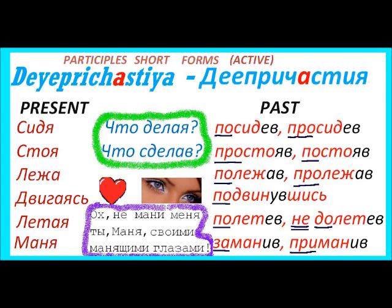The next one is двигаясь — again it's reflexive. Двигаясь means simultaneously moving. The infinitive is двигаться — двигаясь. The next one is летая — flying. Летая is from the verb летать. And the last one is from the verb манить — to tease — маня. The stress is on the last syllable: маня. If you put the stress on the first syllable you would have маня, which is a different word.